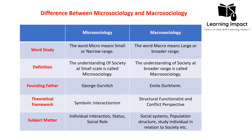Regarding theoretical frameworks, micro sociology includes mostly symbolic interactionism. Symbolic interactionism holds that we as humans first give symbols, then we add meanings to those symbols according to our own thinking, and then we practice those symbols with that meaning so that it becomes normal for society. Symbolic interactionism is essentially social interaction at a low level — face-to-face or two-person interaction — focusing on the interaction between individuals.